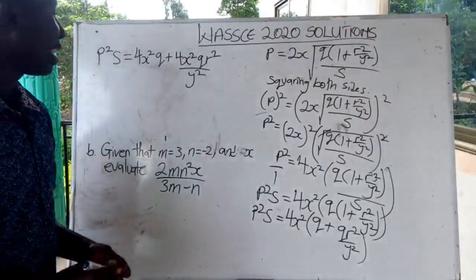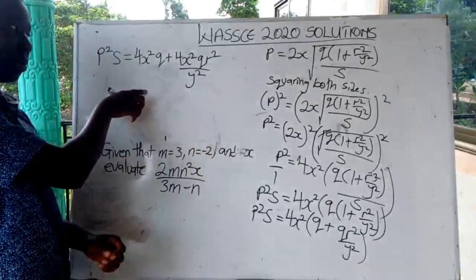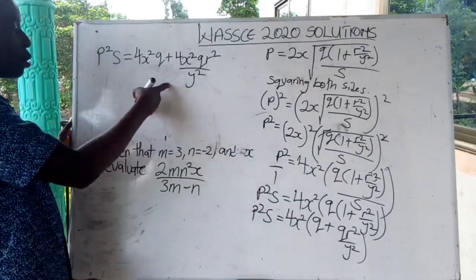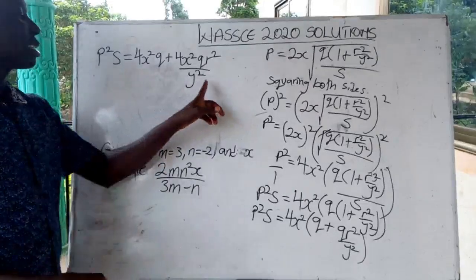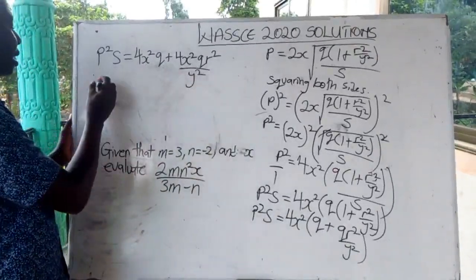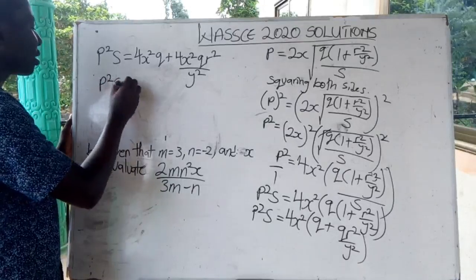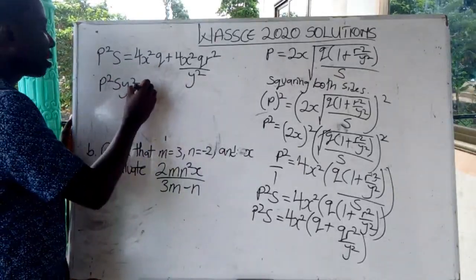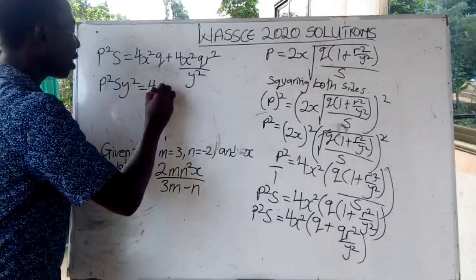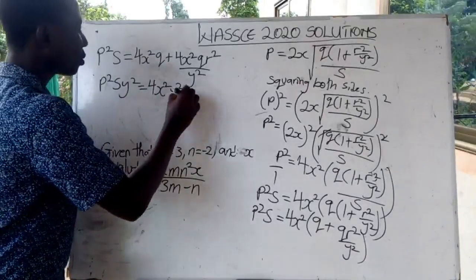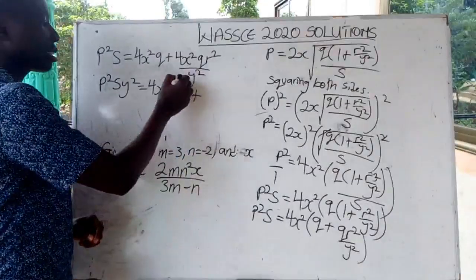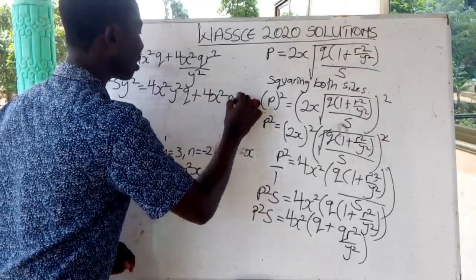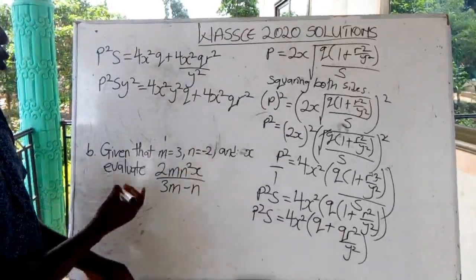Now this is what we are having, and then another denominator is here — y squared. So we are going to multiply through by y squared. When we do that, I will get P squared s y squared — because we are multiplying through with this one — and then multiply y squared with this one also — is equal to 4s squared y squared Q, plus when you multiply y squared by this one, this y squared will cancel, and we get 4s squared Q r squared.